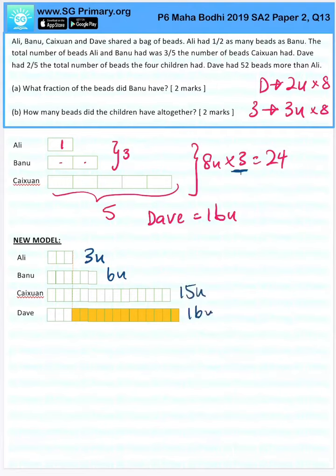With this, we can answer question A. What fraction of the beads did Banu have? Banu has six out of the total, which when you add all together - three plus six plus 15 plus 16 - is 40. In simplest form, it's three out of 20.